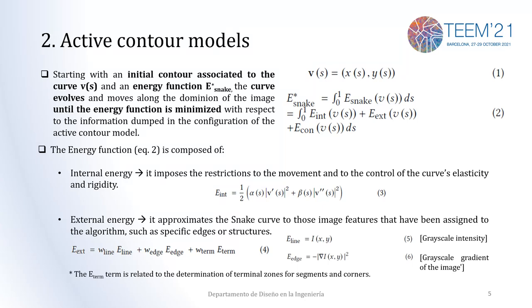We will define an energy function as shown in equation 2. The idea is to minimize this energy function. It is composed of several elements. On the one hand, we have the internal energy, which controls the curve's elasticity and rigidity. Regarding the external energy, it makes the curve move toward those features we want, such as edges or structures. We can also add another term related to external forces that the user might want to add.